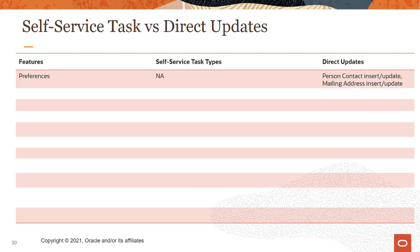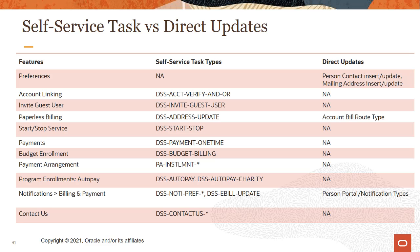Let's look at the different DSST features and whether they generate self-service tasks that must be handled by a CSR, or they process a direct update in C2M. When a customer wants to change their communication preferences, such as adding a new email address and using that email address to get bill due reminders, the changes are applied directly by person contact insert and then added to subscription communication preferences. On the other hand, account linking, invite guest user, start-stop service, payments, budget enrollment, payment arrangement, auto-pay, and contact us will all generate self-service tasks.